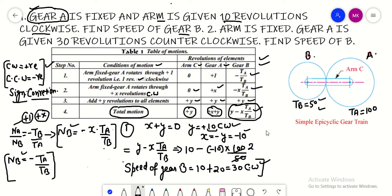Next part: the arm is fixed, so if the arm is fixed, the equation is Y. He is saying Y is 0. And gear A is given 30 revolutions counterclockwise. Gear A is X plus Y, so the value of X plus Y is 30. This is minus because it is counterclockwise.